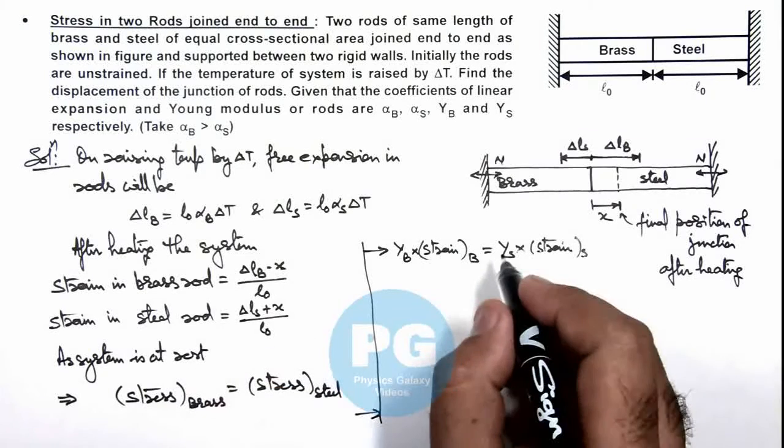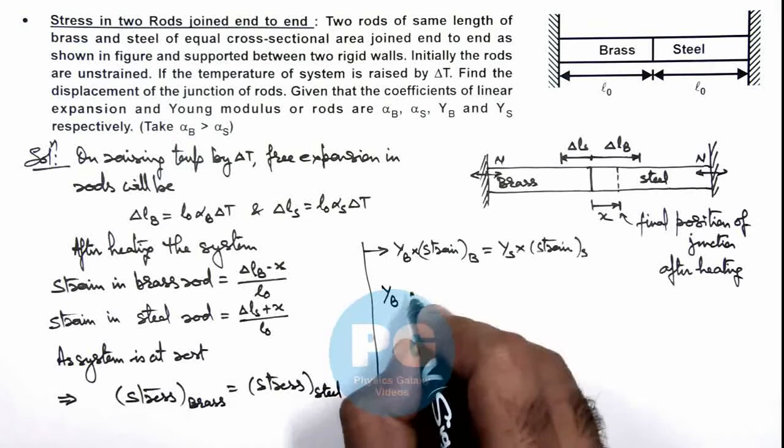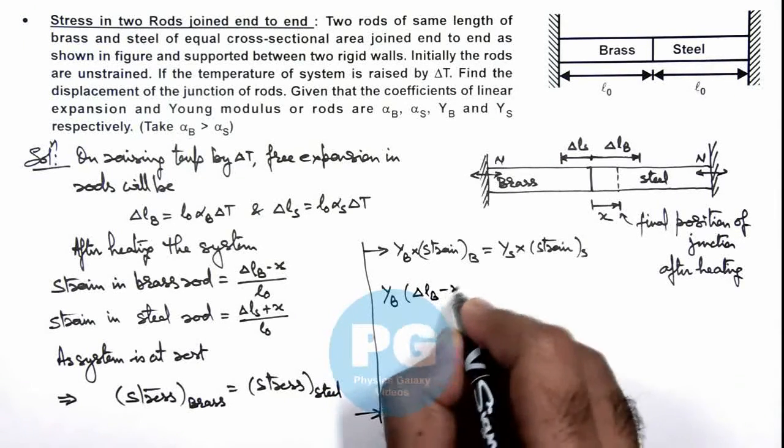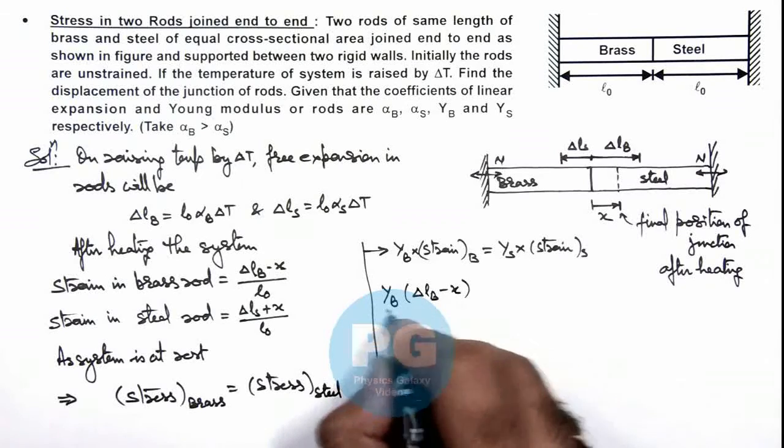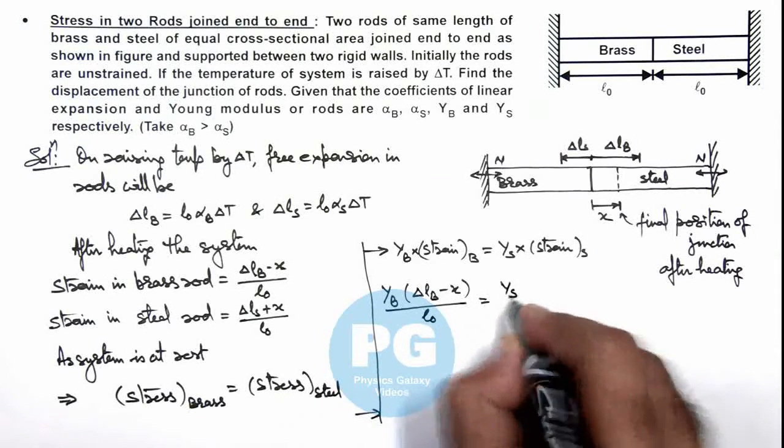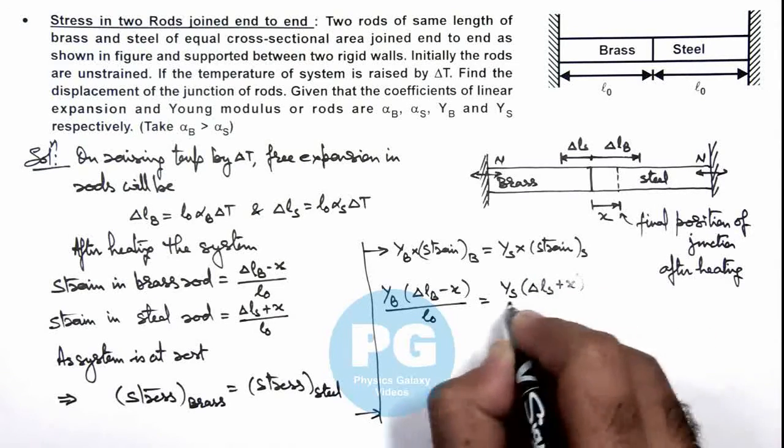So if we substitute the values, this will give us Young's modulus of brass multiplied by (ΔLB - x)/L₀ is equal to Young's modulus of steel multiplied by (ΔLS + x)/L₀.